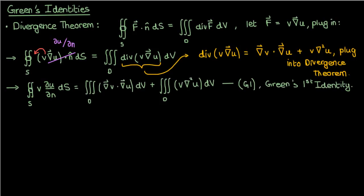This identity is valid for a nice enough space d in any pair of functions u and v, as long as they're nice and differentiable.